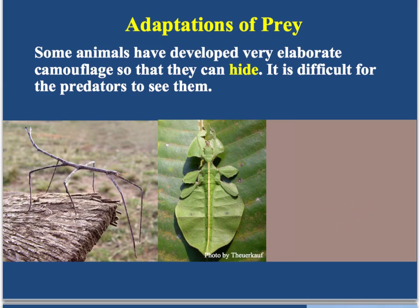Another adaptation that some prey animals develop is camouflage. They hide themselves in plain sight by making themselves look like their environment so it's hard for the predator to see them. This is an example of a leaf bug — if it were further away, you wouldn't be able to tell it apart from the leaf it's sitting on. Here's a walking stick, which has the ability to blend in with tree branches and bark because it looks like a twig.